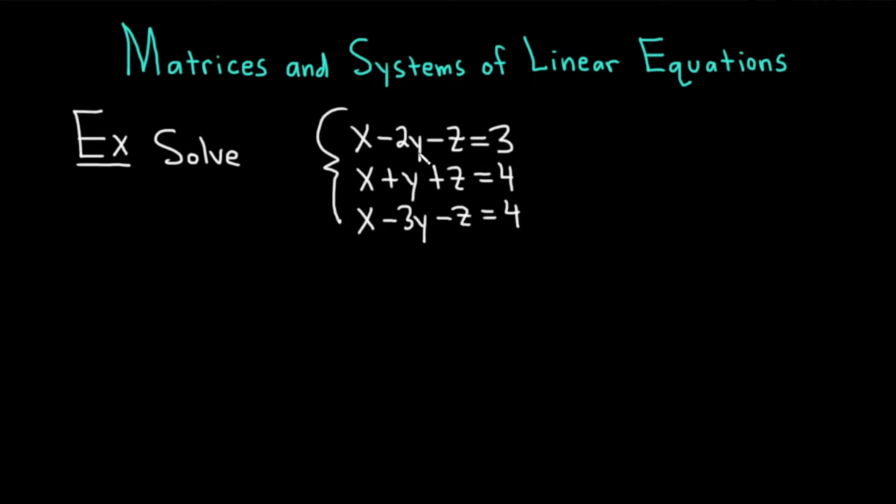The question is to solve the system with the following equations. We have x minus 2y minus z equals 3, x plus y plus z equals 4, and x minus 3y minus z equals 4. Let's carefully work through this solution. This is a really cool way to solve systems.